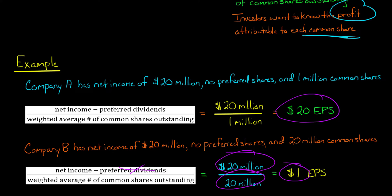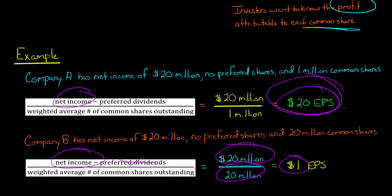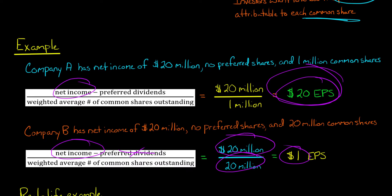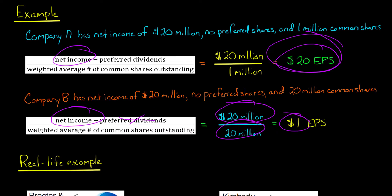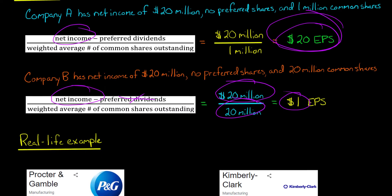So they both generated the same profit when you just look at net income. But if you own just a single share of this company, you'd say that a higher amount of profit is attributable to that single share owned by an investor.